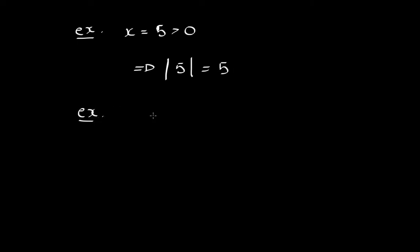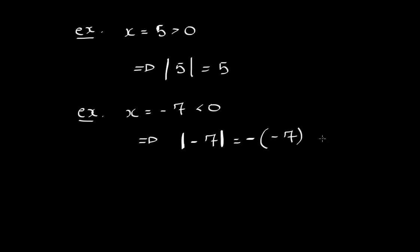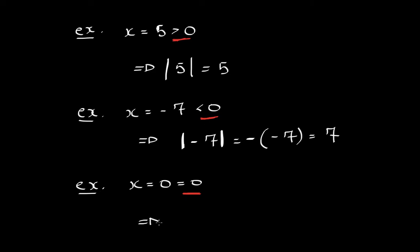If I make x equal to five, since five is greater than zero, if you put this in the absolute value machine it will take five and spit out five. Another example: if x is negative seven, clearly this is less than zero, so the absolute value function puts a negative in front of your input — two negatives make a positive, so this gives positive seven. And if x equals zero, the absolute value just keeps it as zero.